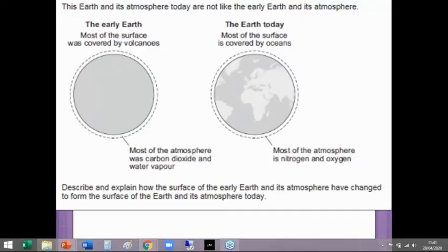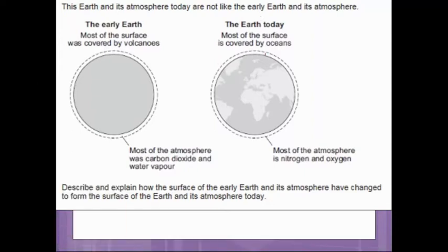Okay, so first off we're actually going to start by looking at an exam question. This is a six mark question from GCSE about three years ago, from the old spec but it is a good one. It gives you two examples of the Earth before and after, so this on the left hand side is the early Earth covered in volcanoes. Most of the atmosphere was carbon dioxide and water vapor, whereas the Earth today most of the surface is covered in water and most of the atmosphere is nitrogen and oxygen.